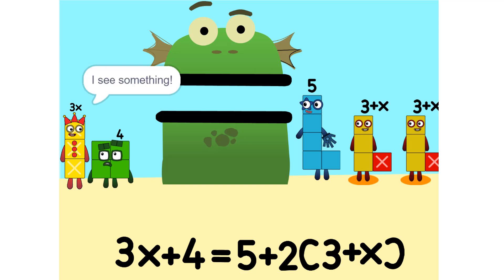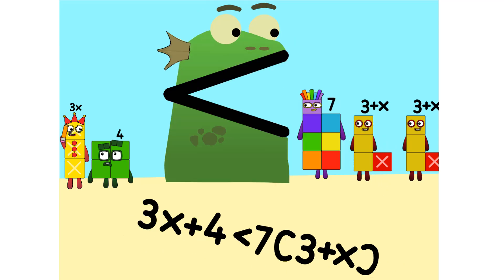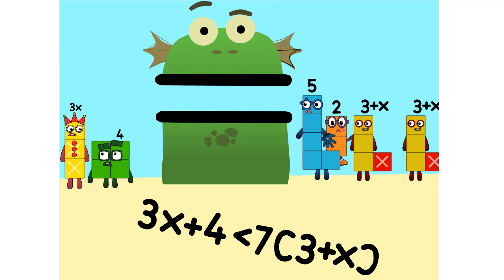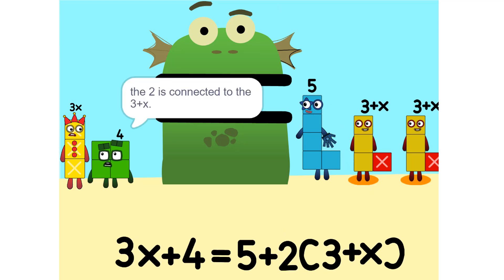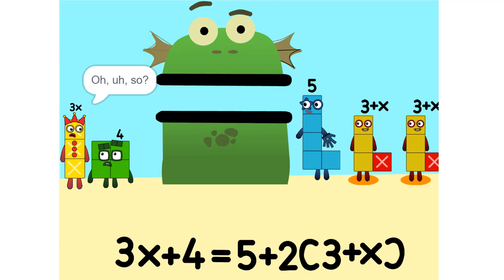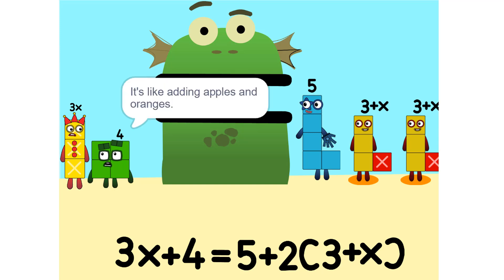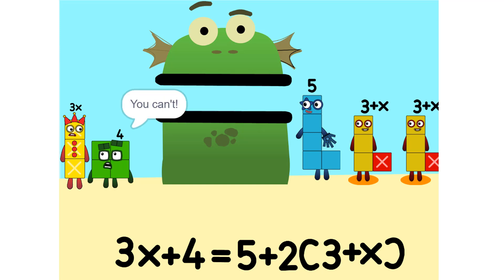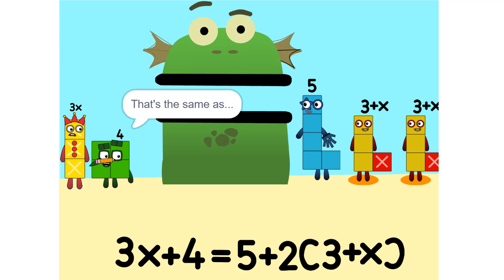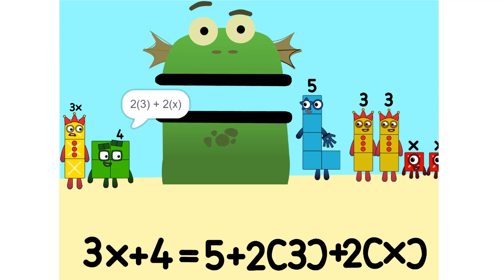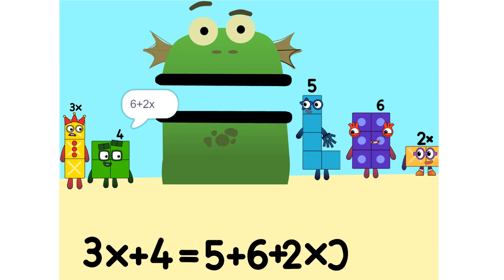I see something we can add this. Why did that happen? Because the 2 is connected to the 3 plus x. Oh — so it's like adding apples and oranges. So what do we do? Okay, see the 2 times 3 plus x? That's the same as 2 times 3 plus 2 times x, which is 6 plus 2x.